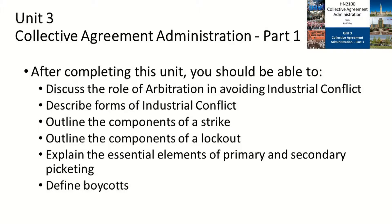After completing this unit, you should be able to discuss the role of arbitration in avoiding industrial conflict, describe forms of industrial conflict, outline the components of a strike, outline the components of a lockout, establish essential elements for primary and secondary picketing, and define what kinds of boycotts exist.